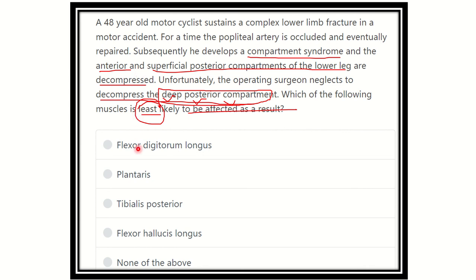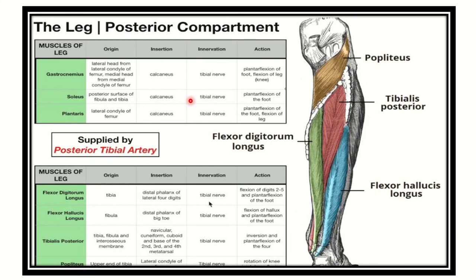The options are: flexor digitorum longus, plantaris, tibialis posterior, flexor hallucis longus, and none of the above. We have to find the one muscle which is not located in the deep posterior compartment of the leg.